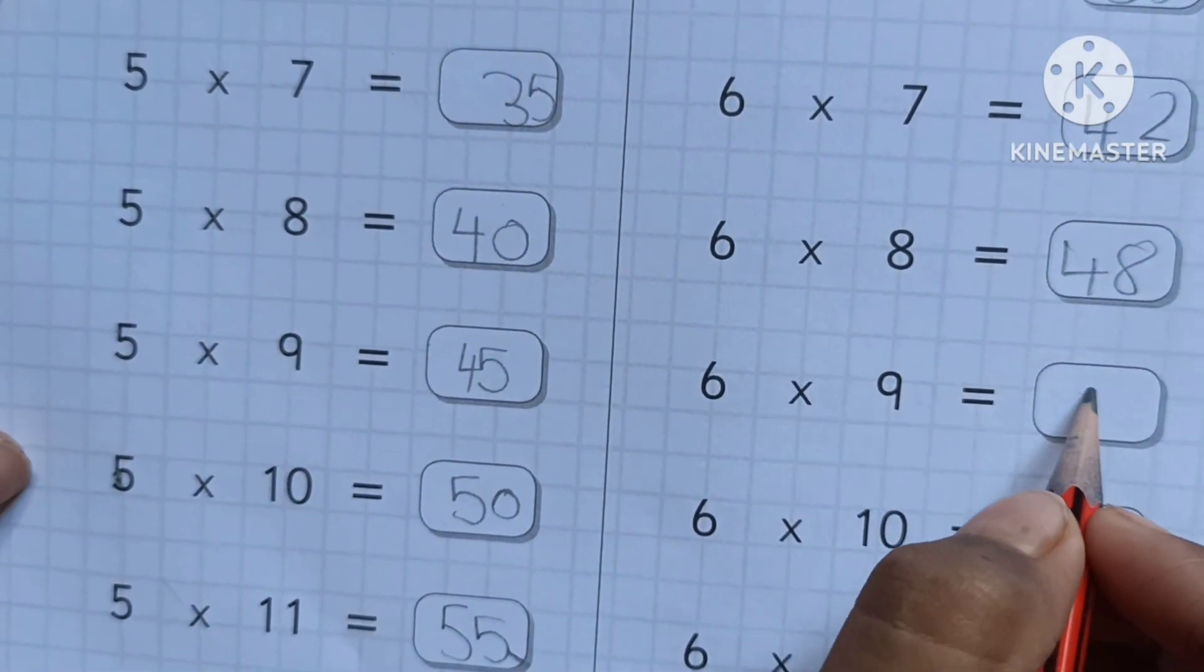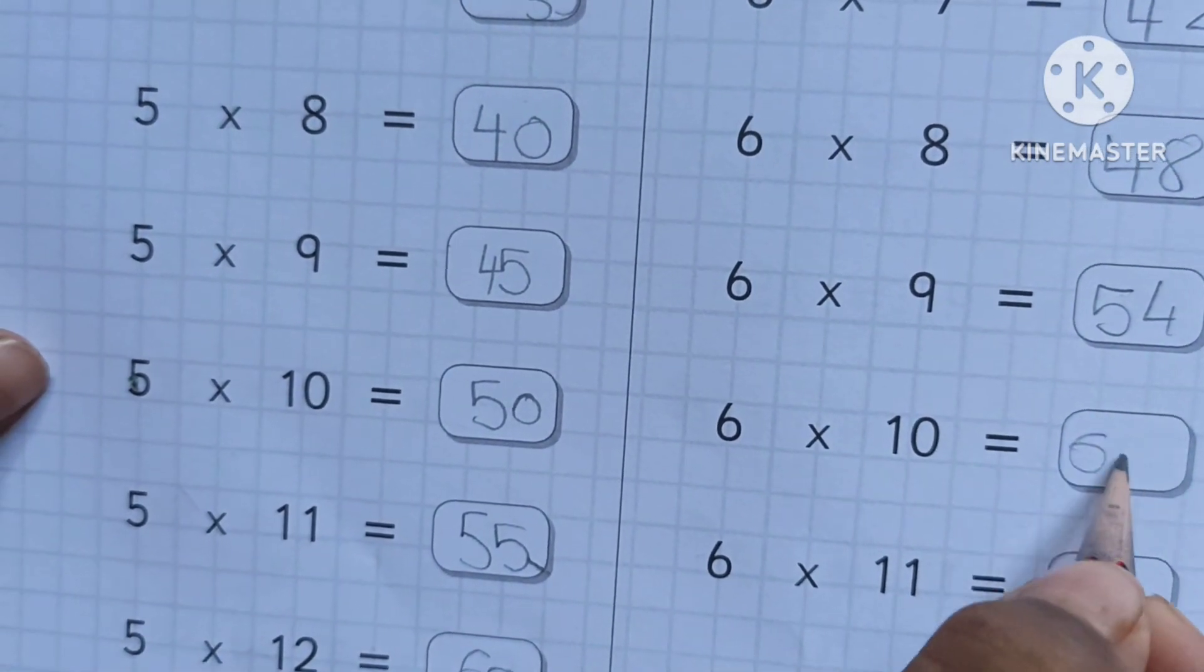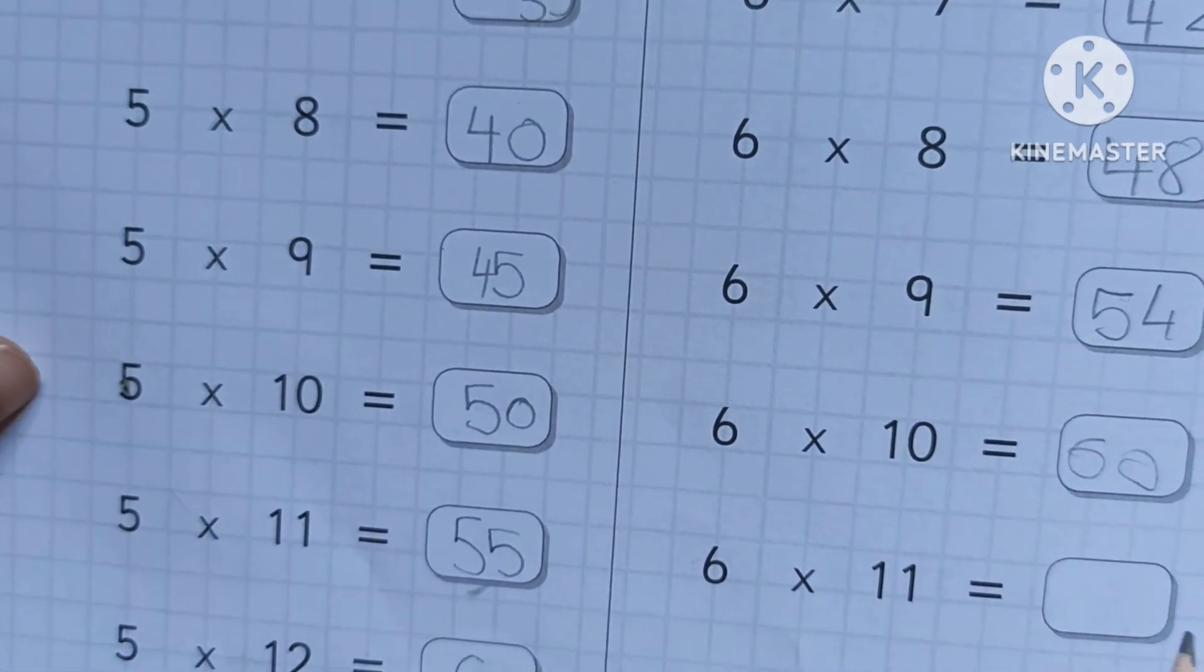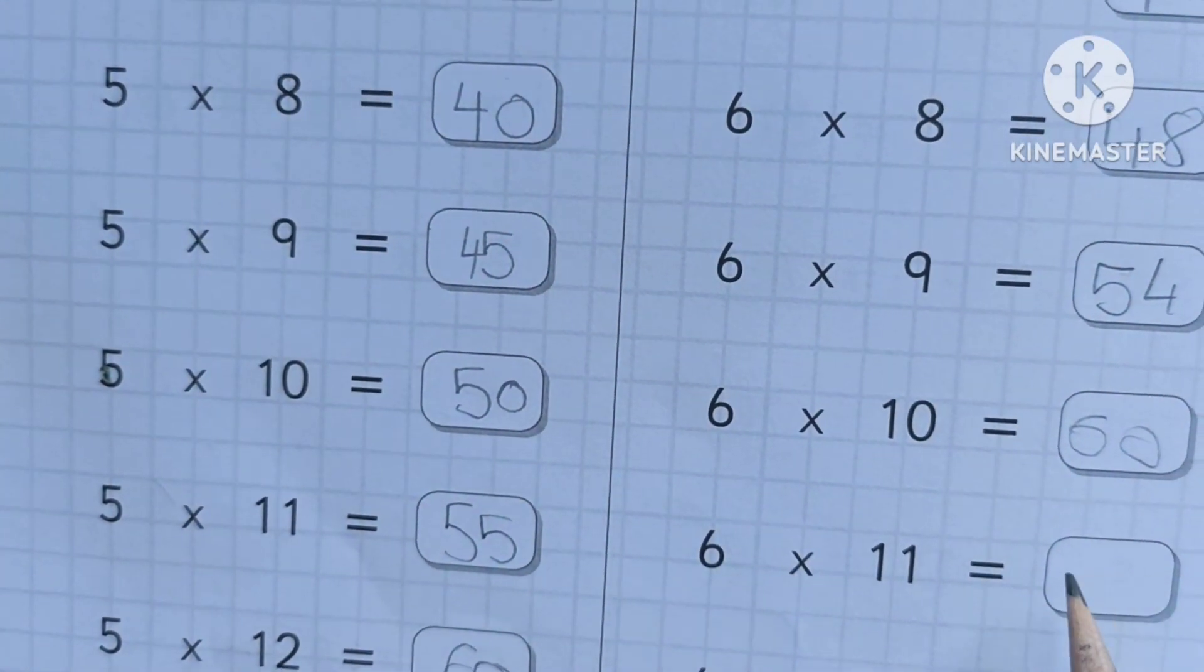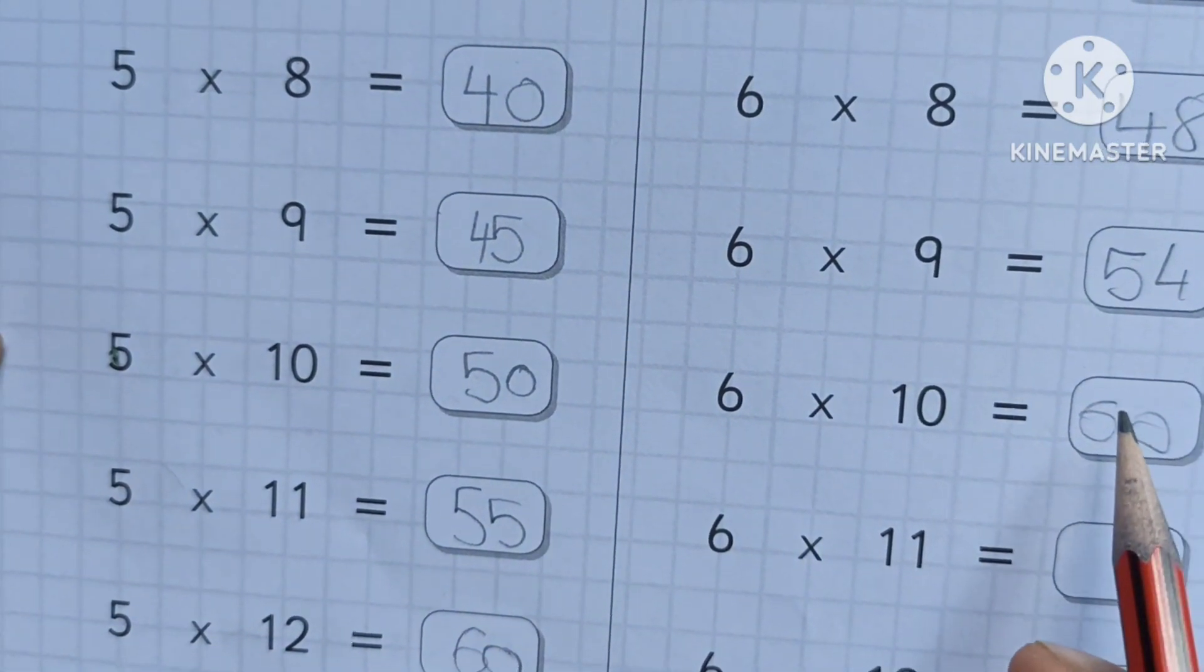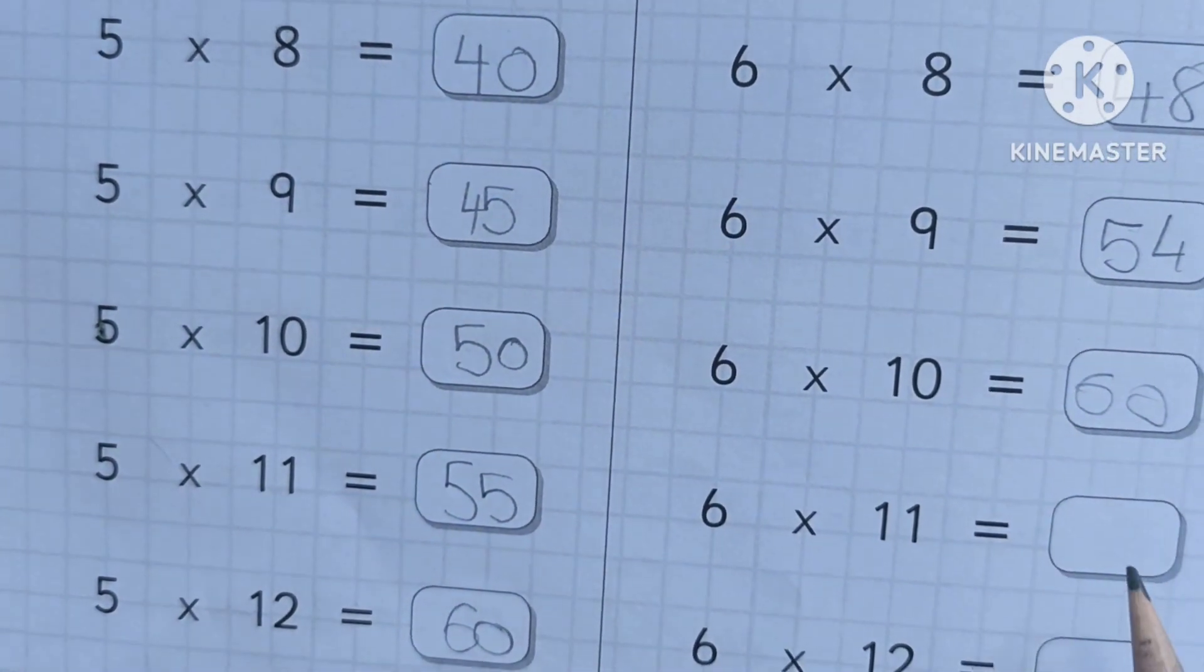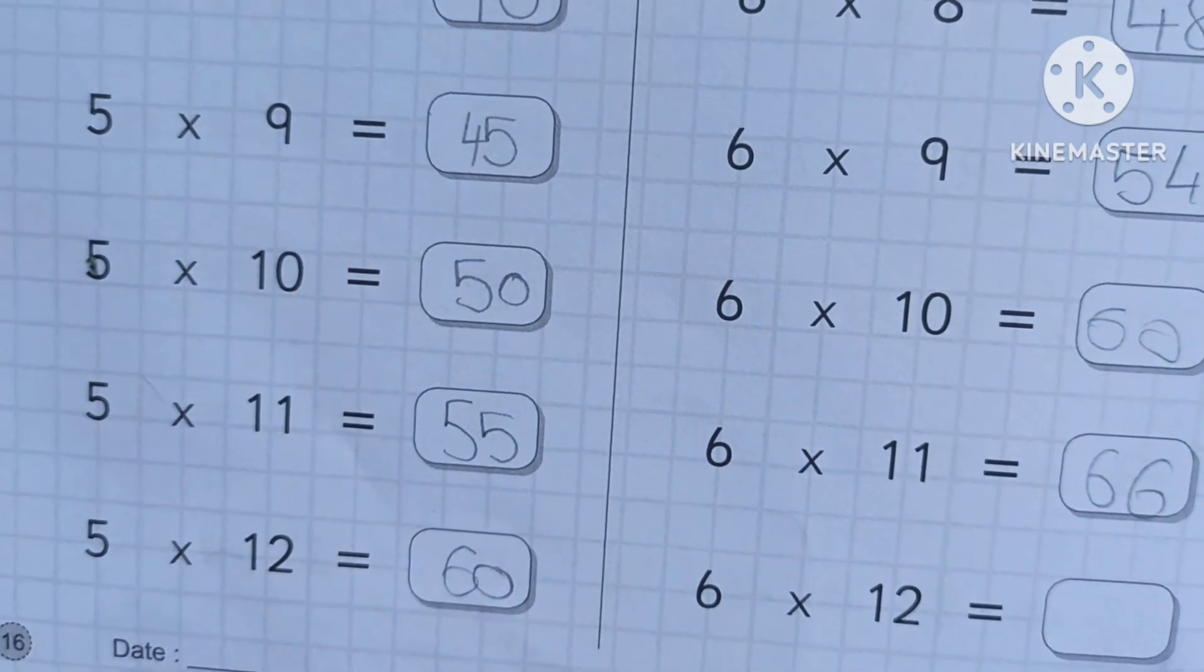Six nines are fifty-four. Very good. Six tens are sixty.